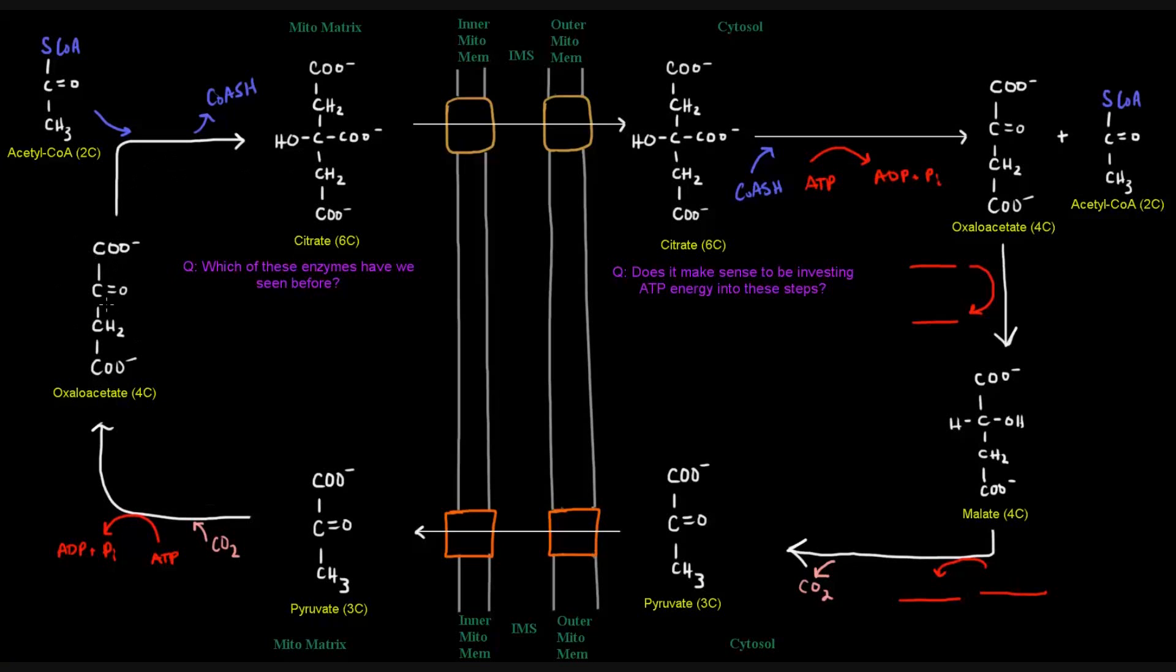Now, oxaloacetate, a four-carbon molecule, also doesn't cross the mitochondrial membrane. However, when you link these two together to make citrate, you create a six-carbon molecule that can cross. It's got this little transport protein that allows it to flow out into the cytosol. So, linking these two molecules, this acetyl-CoA and this oxaloacetate, together, that is done by an enzyme called citrate synthase, which we've actually seen before. Where have we seen that before? The TCA cycle. It's the first step of the TCA cycle.